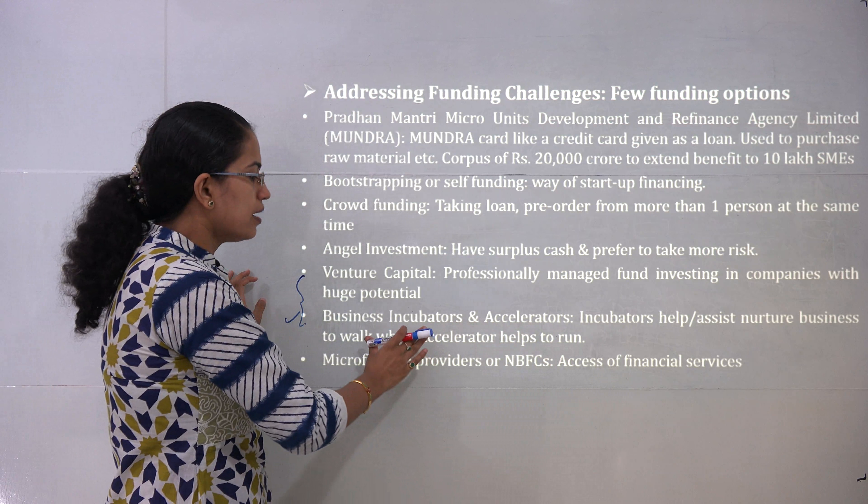The Startup India program laid down a 19-point action program — very important for exams. The 19 points include protecting patents, online registration, providing a startup hub, self-certification compliance, no capital gains and no income tax for the first three years, building entrepreneurship, faster exit, and easy rules for a startup. All this improves the ease of doing business. Tax exemption is also available for investments of higher value than the market price.